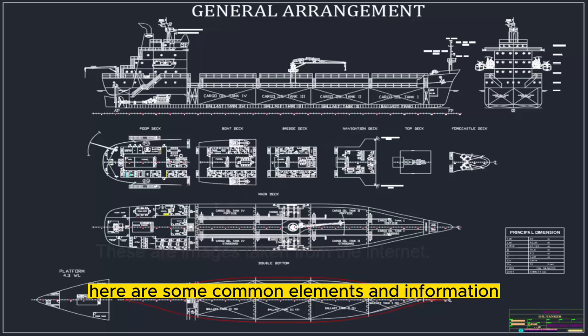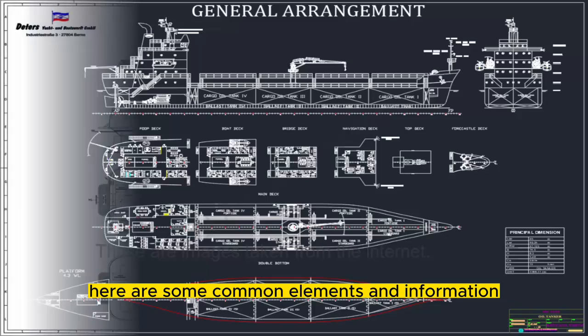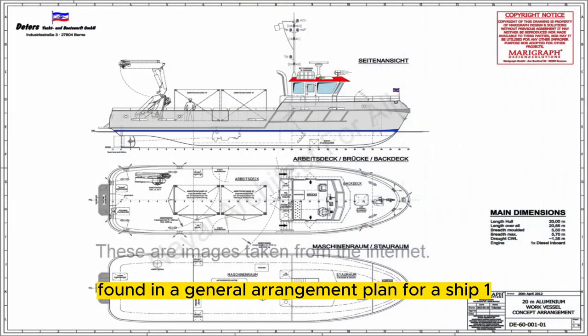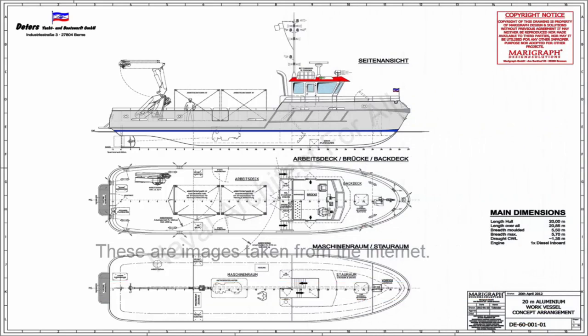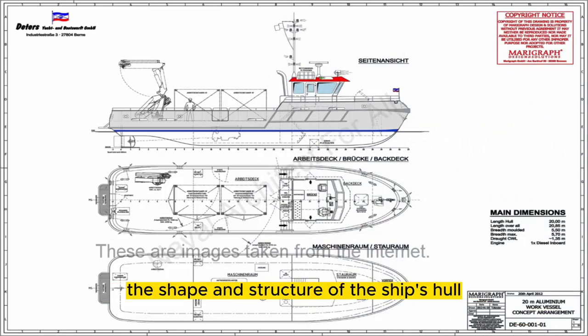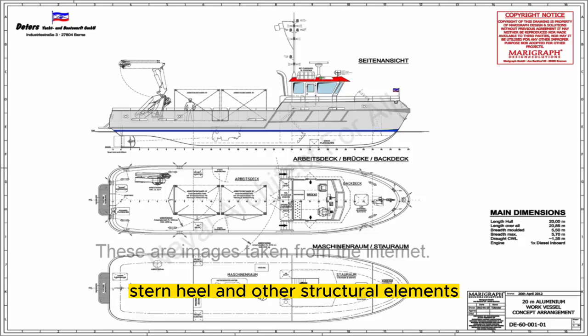Here are some common elements and information found in a general arrangement plan for a ship. 1. Hull Structure: The plan illustrates the shape and structure of the ship's hull, including details about the bow, stern, keel, and other structural elements.